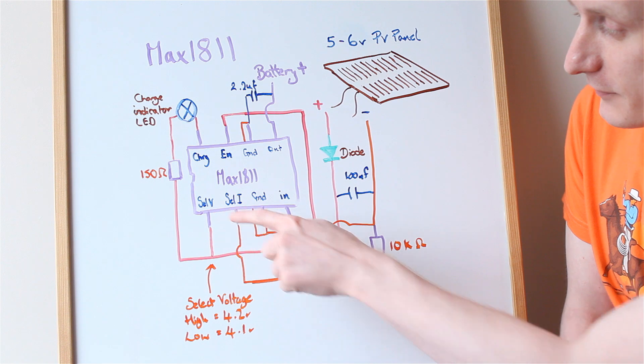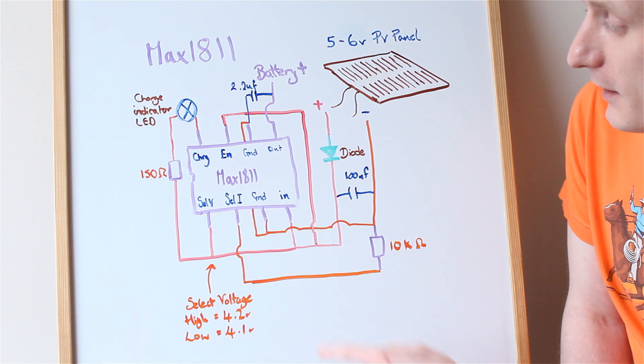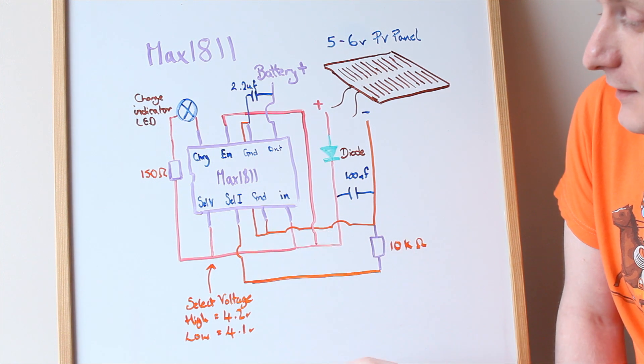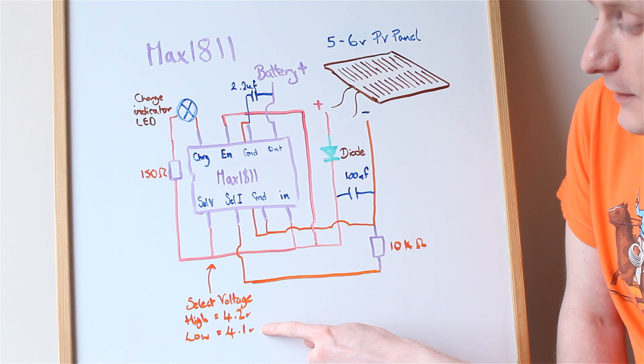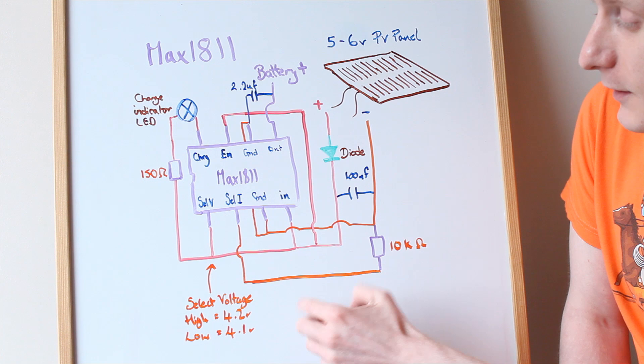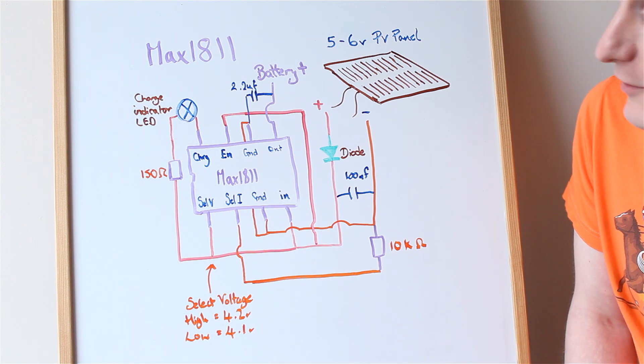Again there's another SELECT here, so SELECT VOLTAGE, if you put that to IN, you select 4.2V, and if you put it to GROUND or LOW, then you select 4.1V. I'm selecting 4.2V because I want to get the most out of my batteries.